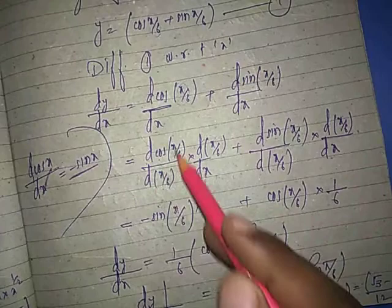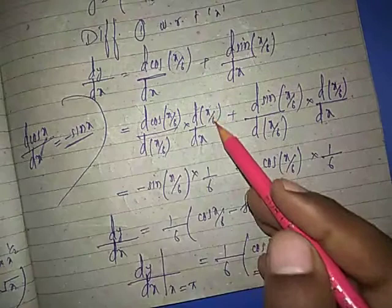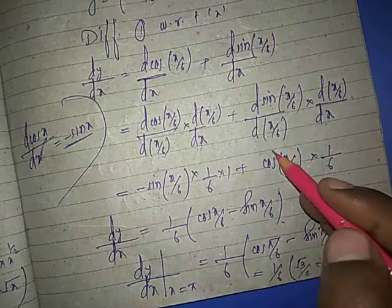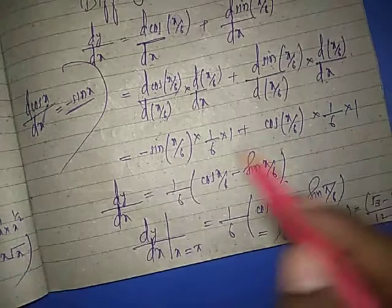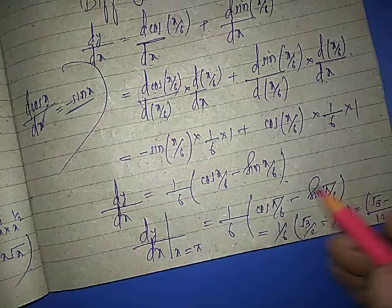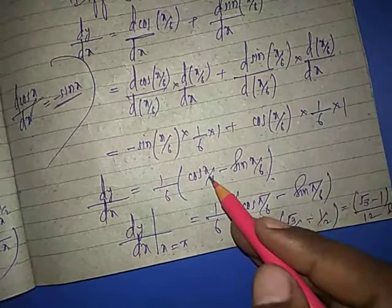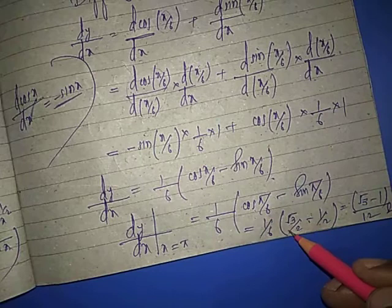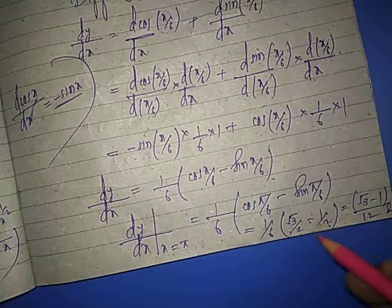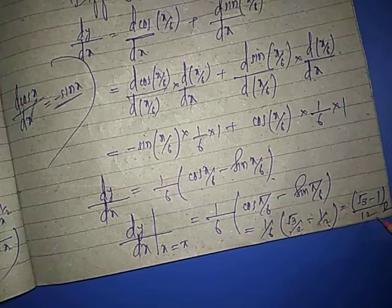d cos x by 6 gives minus sine x by 6 times 1 by 6. Same process for sine gives cos x by 6 times 1 by 6. Taking 1 by 6 common, dy by dx equals 1 by 6 times cos x by 6 minus sin x by 6. At x equals pi, this becomes 1 by 6 times cos pi by 6 minus sin pi by 6, which is 1 by 6 times root 3 by 2 minus 1 by 2. Taking LCM, this equals root 3 minus 1 divided by 12. I hope this sum is clear.